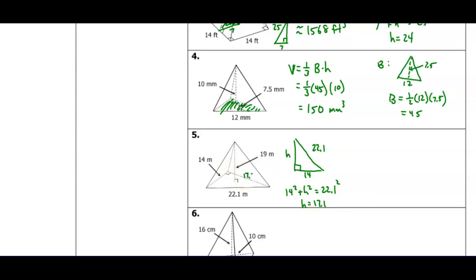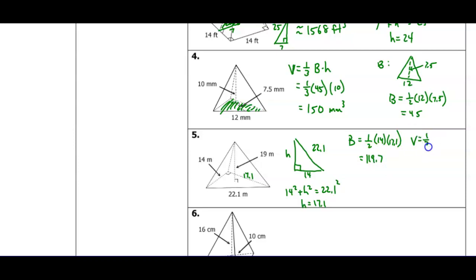With the triangle height of 17.1, the base area is one-half times 14 times 17.1, which equals 119.7. The pyramid volume is one-third times 119.7 times the given pyramid height of 19, giving a result of 758.1 cubic units.